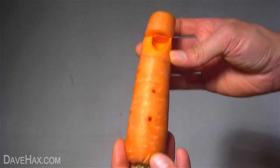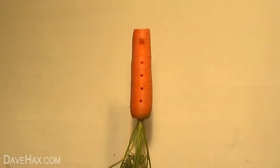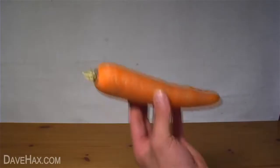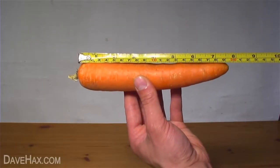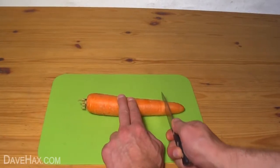Today I'm going to show you how to make a recorder out of a carrot. Start by taking a carrot, this one measures about 20cm long and 3.5cm in diameter and cut about 5cm off the end.